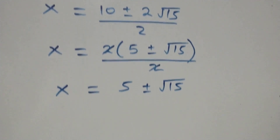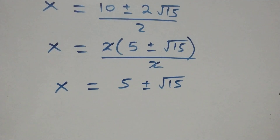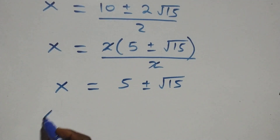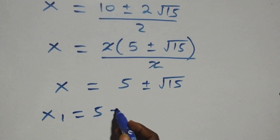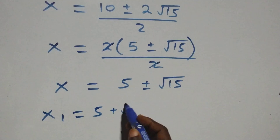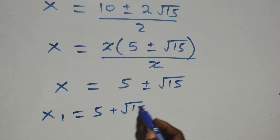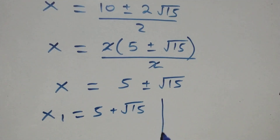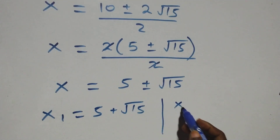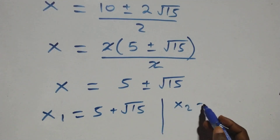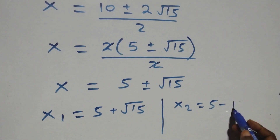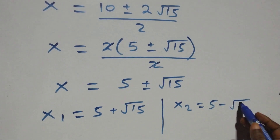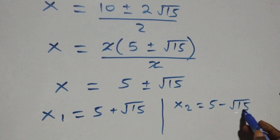We now have two possible values of x. The first one is x₁ equals to five plus root fifteen, and the second one is x₂ equals to five minus root fifteen.